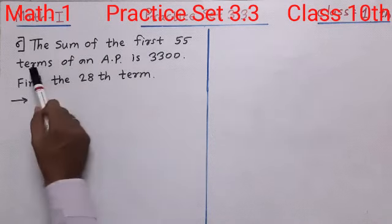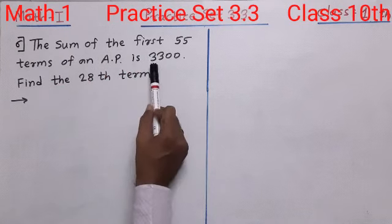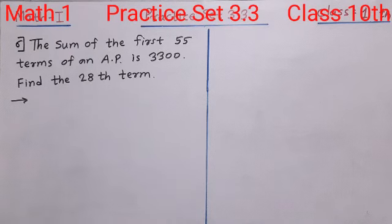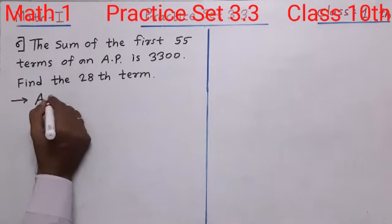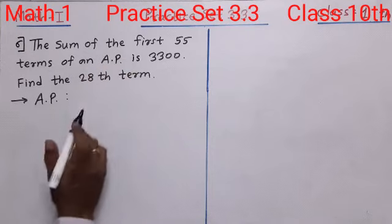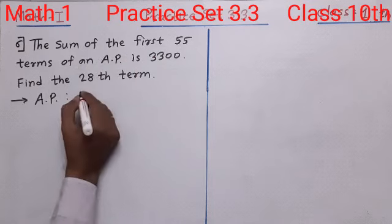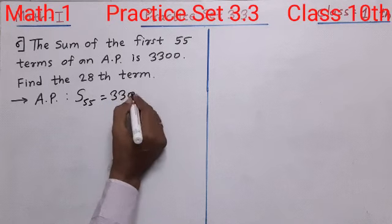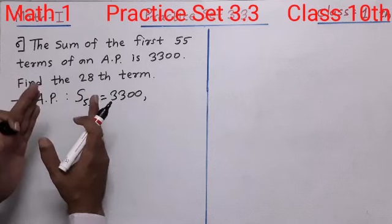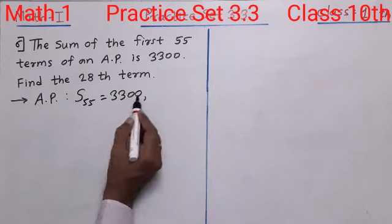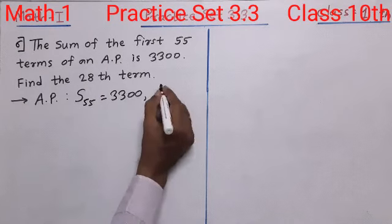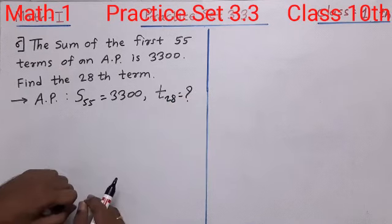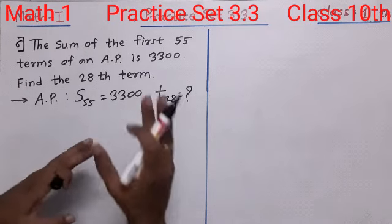The next question: the sum of the first 55 terms of an AP is 3300. Find the 28th term. So let us write what is given and what we have to find out. We are given S55 equals 3300. We have to find the 28th term, T28, of the same AP in which the sum of the first 55 terms is 3300.